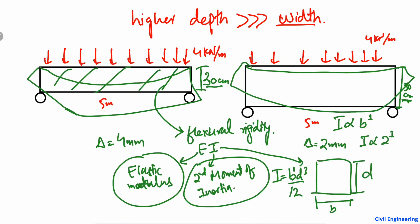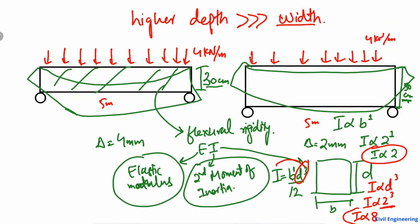However, the moment of inertia is proportional to the depth D with a power of 3 (cube). So if the depth of the beam increases two times, then 2³ = 8, meaning the moment of inertia increases eight times. That is why beams are preferably made with a higher depth compared to width — increasing depth by the same ratio gives eight times more moment of inertia, versus only two times for width.